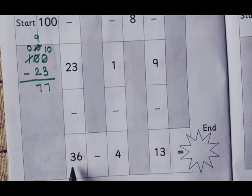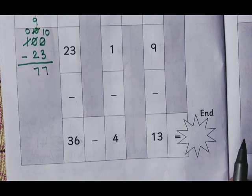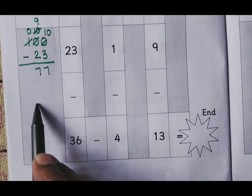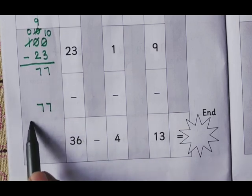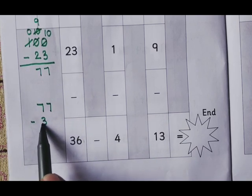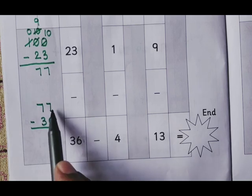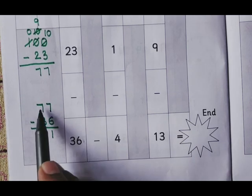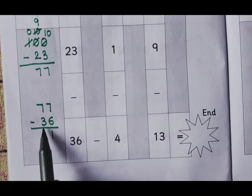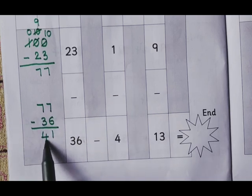From 77 here to minus 36. We will do rough work here. Rough work is very important. 7 minus 6 is 1. 7 minus 3 is 4. 41.